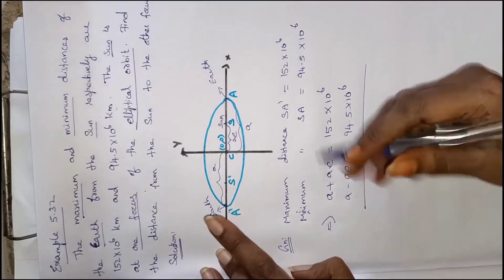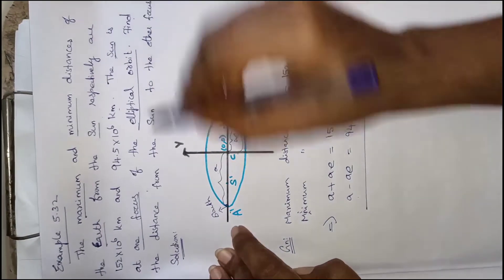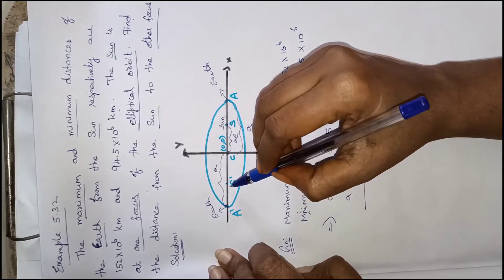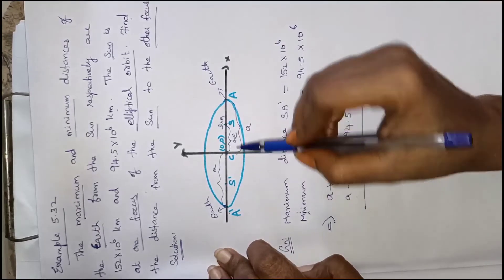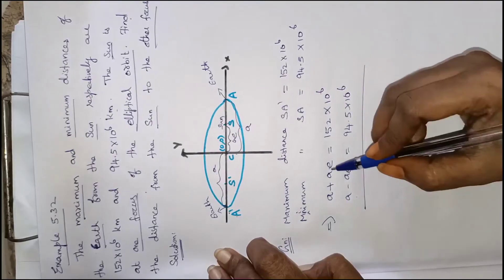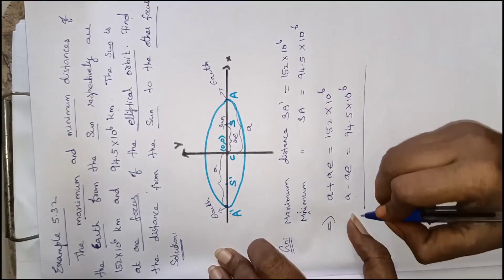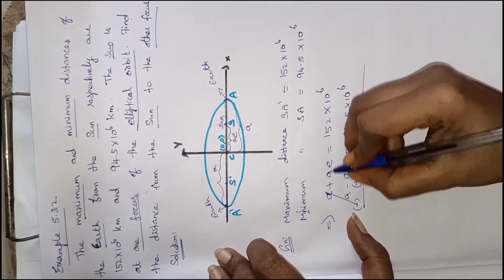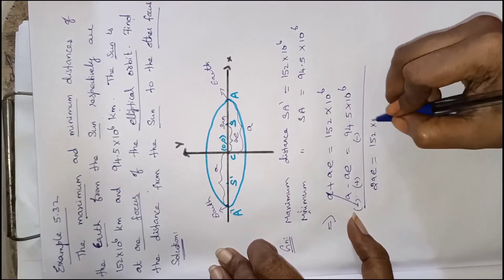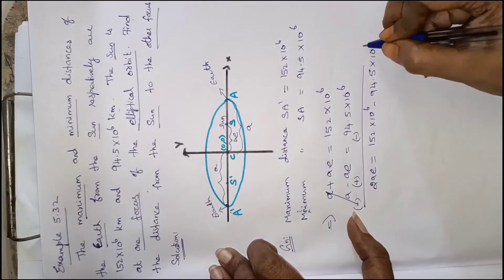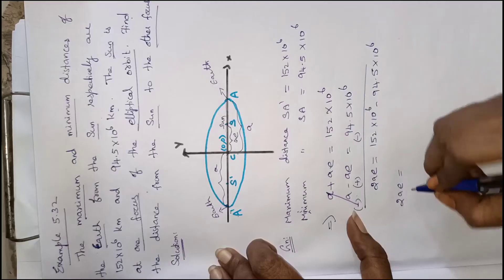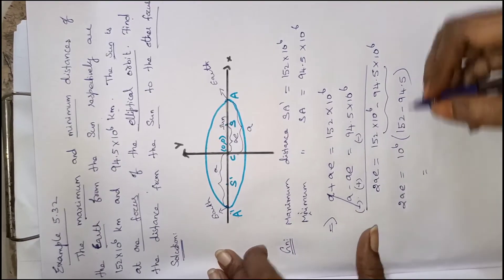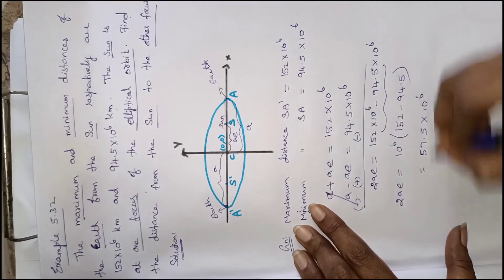Now using the elimination method, we subtract the two equations. The ae terms: adding SA' and subtracting SA gives 2ae. So 2ae equals 152 into 10 power 6 minus 94.5 into 10 power 6. That is 57.5 into 10 power 6.